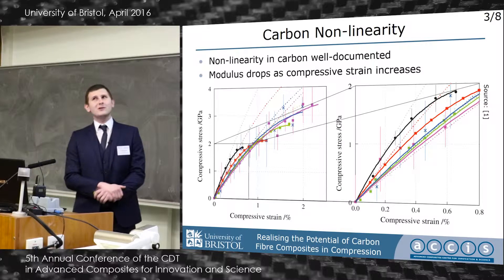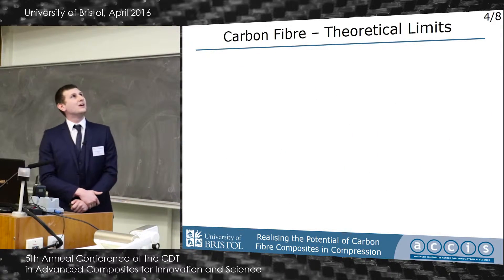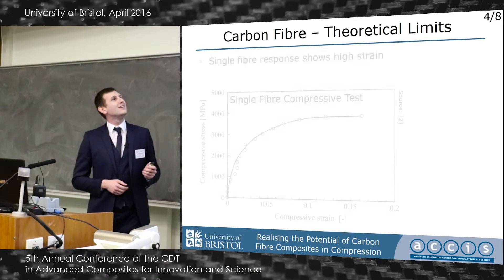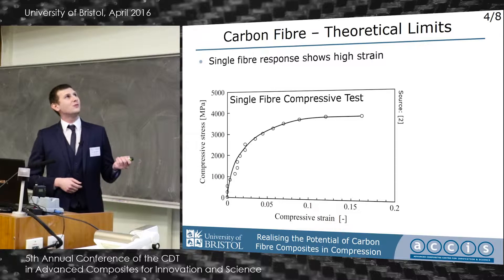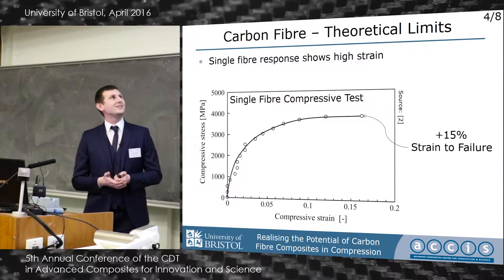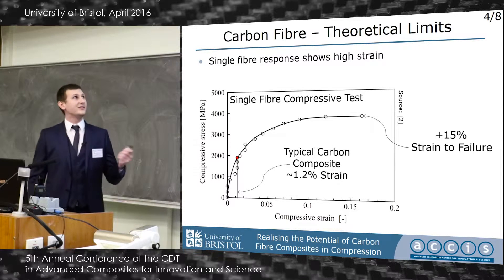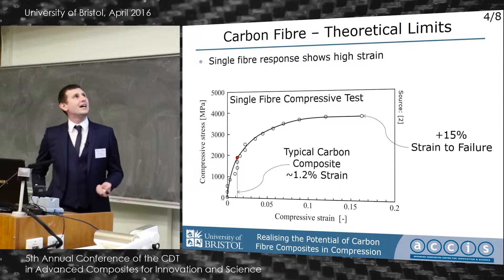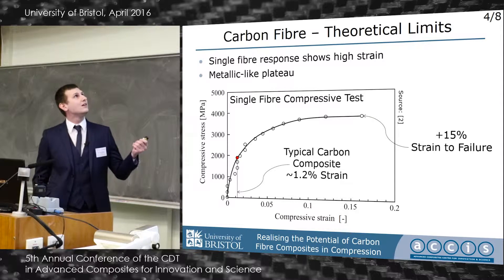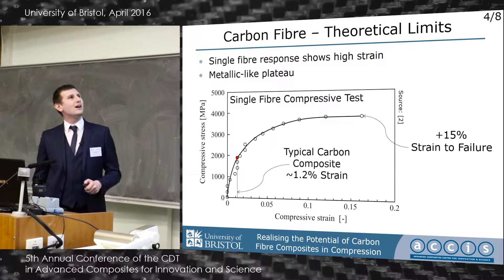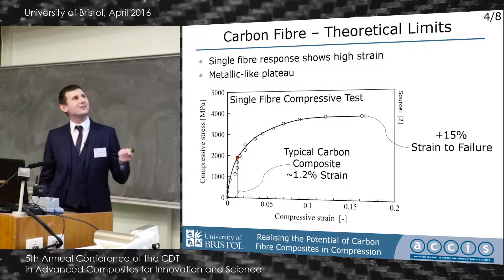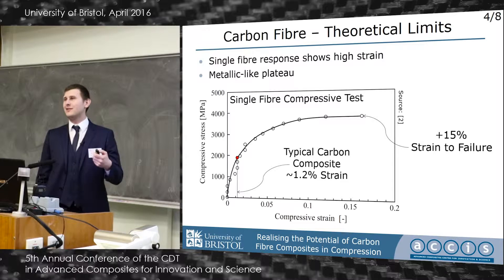What will happen if we go to really high strains? We have indications from testing single fibers — a really high strain of 15% compared to our typical laminates of 1.2%. And we have this metallic-like plateau in here.